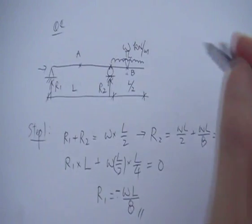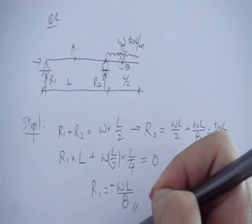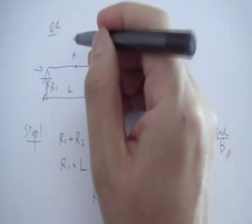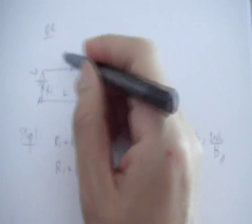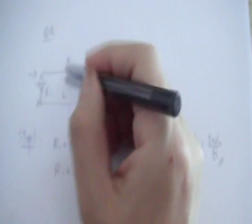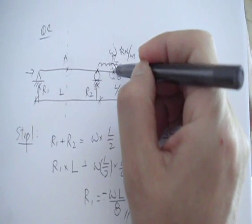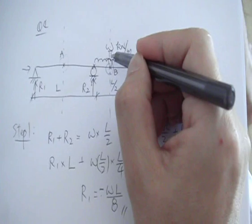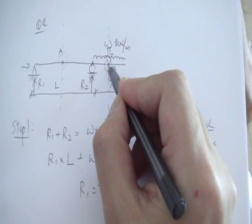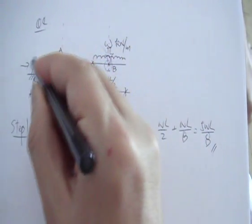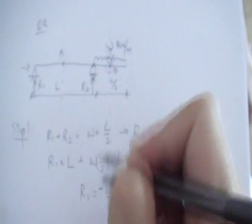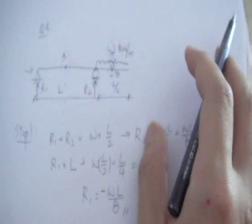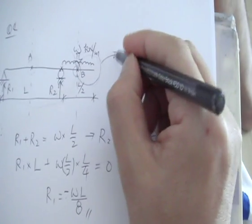The next step is to find the bending moment at two points. For the first one, you cut it there and consider the left part — that's easy to carry out. For the cut at point B, you can take the left part or the right part. You choose the right part because that's a lot easier.